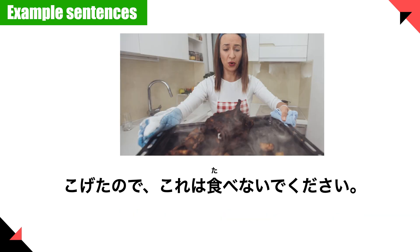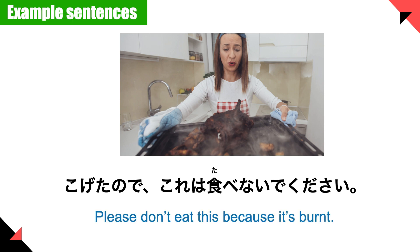Next: 焦げたので、これは食べないでください — please don't eat this because it's burnt. 焦げた means 'it's burnt,' and 食べないでください means 'please don't eat this.' So 焦げたので、これは食べないでください — please don't eat this because it's burnt.